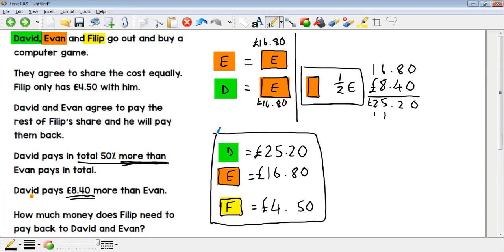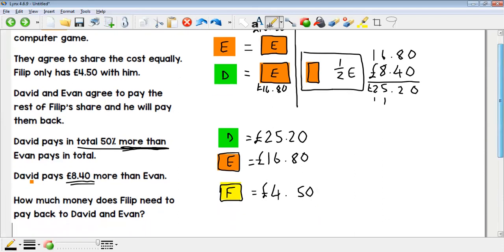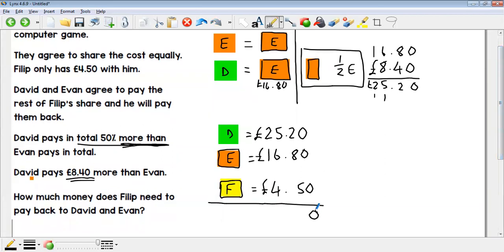If this is all the money they've paid here, if we add it all up, we find out the cost of that game. So when we add them all together, we can use our column addition to help us. The game is equal to £46.50.